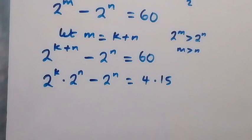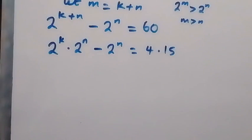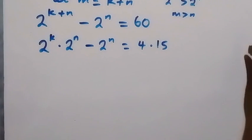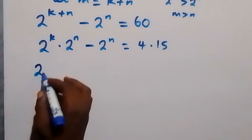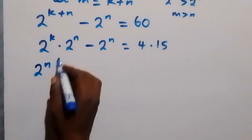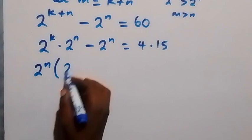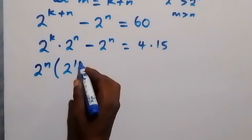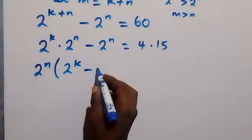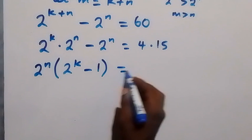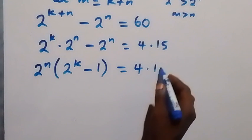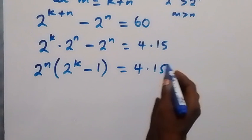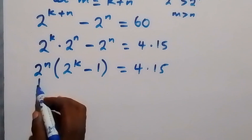From here we factor out the common term 2 raised to power n. This leaves 2 raised to power k minus 1, which equals 4 times 15.